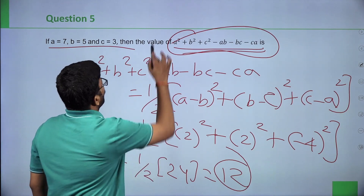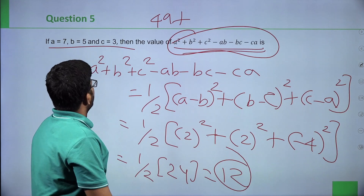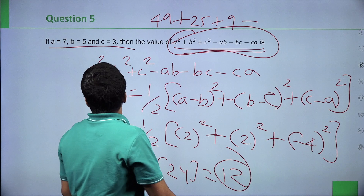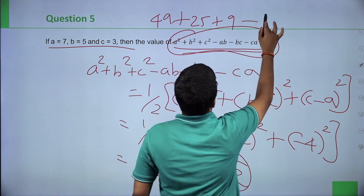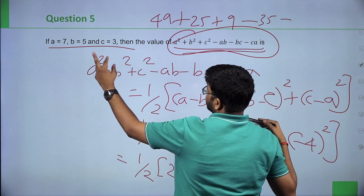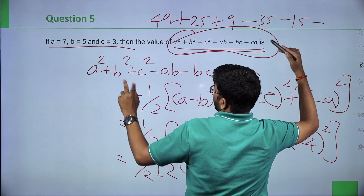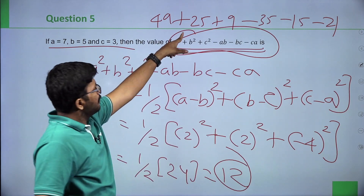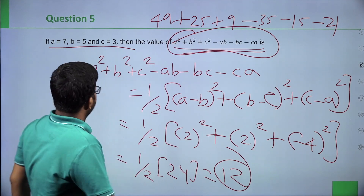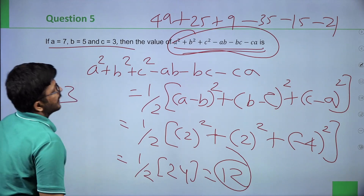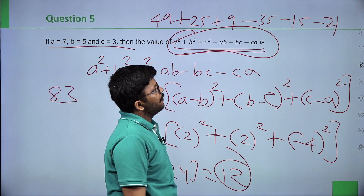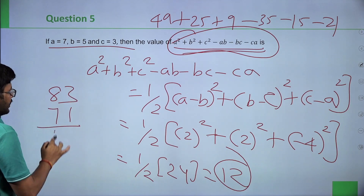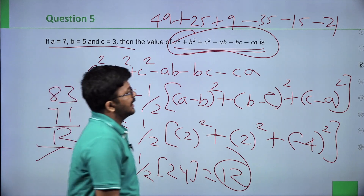We can verify directly: a square is 49, b square is 25, c square is 9. ab is 35, bc is 15, ca is 21. So 49 plus 25 plus 9 = 83, and 35 plus 15 plus 21 = 71. Then 83 minus 71 equals 12. The answer is confirmed as 12.